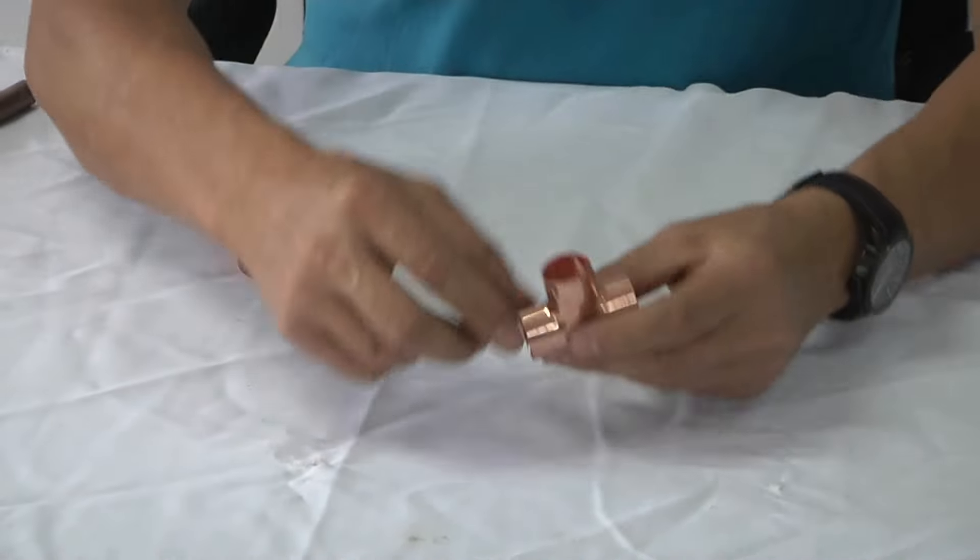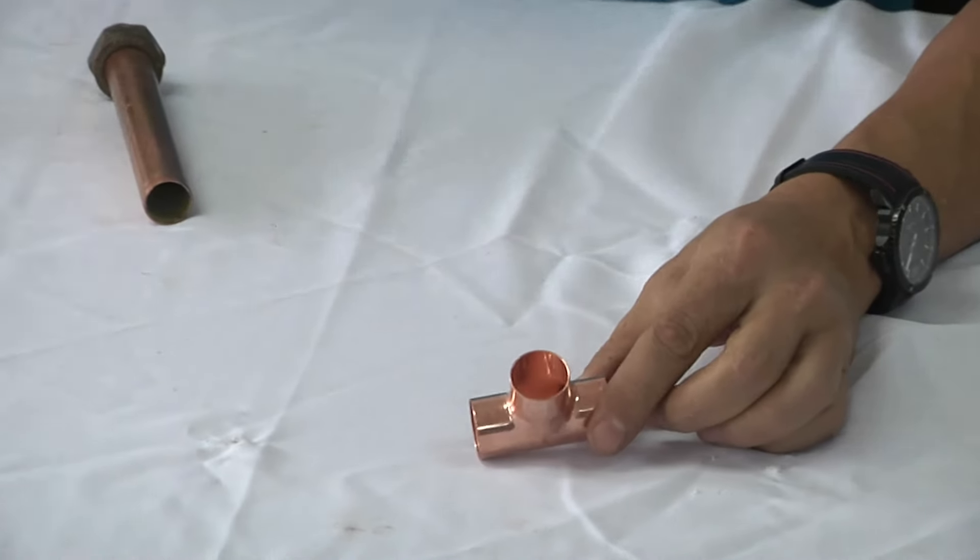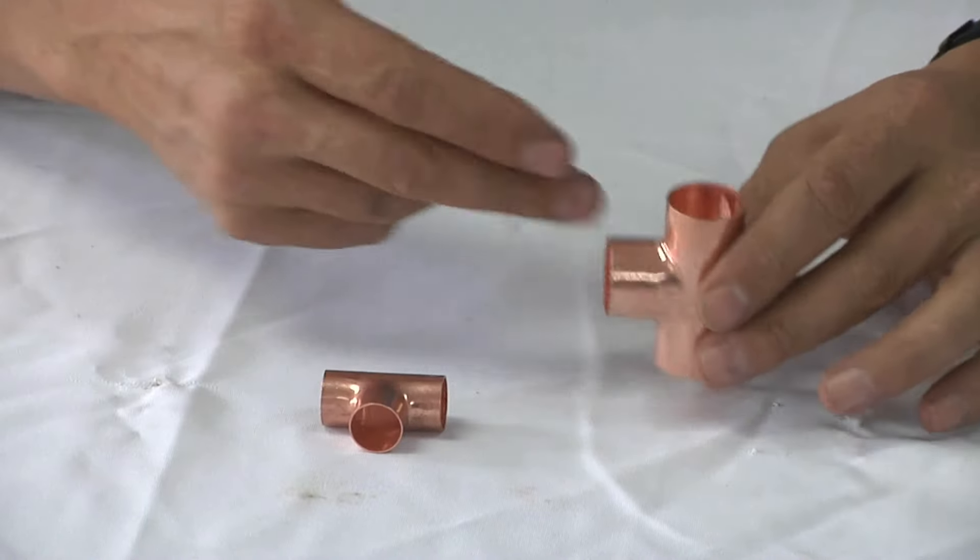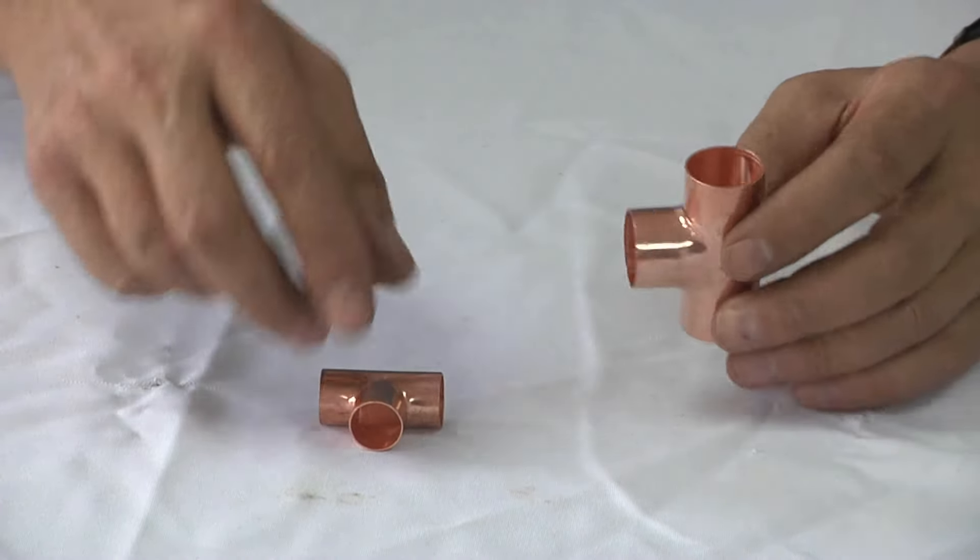Then we have a 22 millimeter tee piece and a 15 millimeter tee piece. This is when you want to put pipes in different directions you'll use this tee piece.